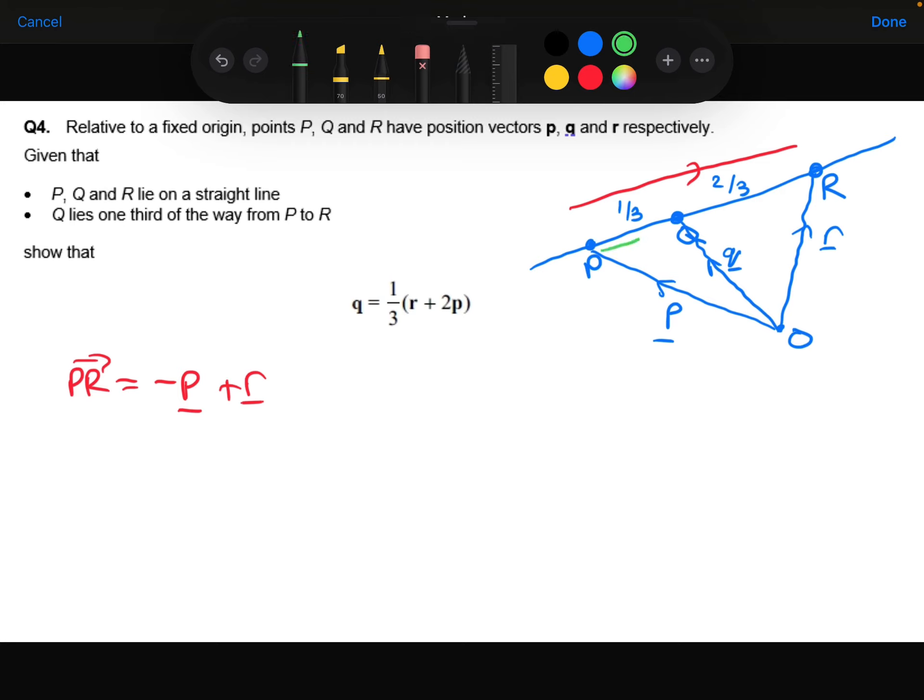Now P to Q, I know that that is one third of P to R. So I can say P to Q is one third of P to R, which I just found in red above. So that's one third of the minus p plus r. Or if I wish, I could expand that out to be minus one third p plus one third r.